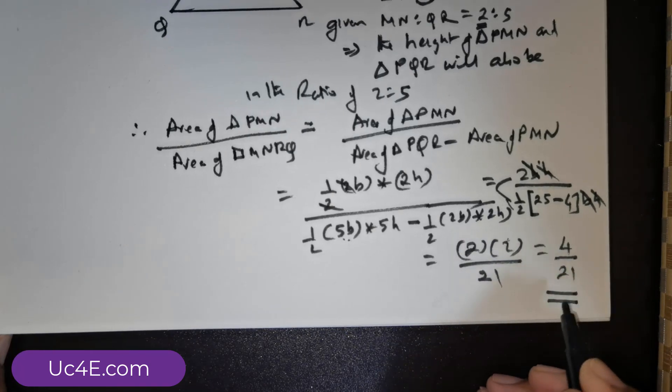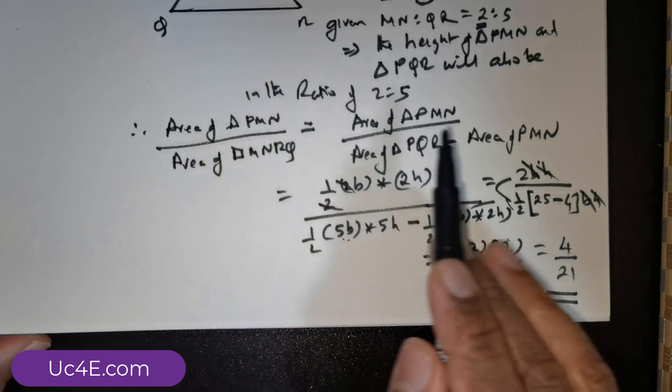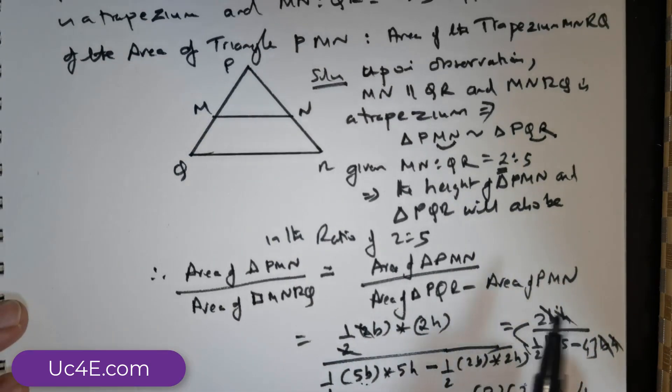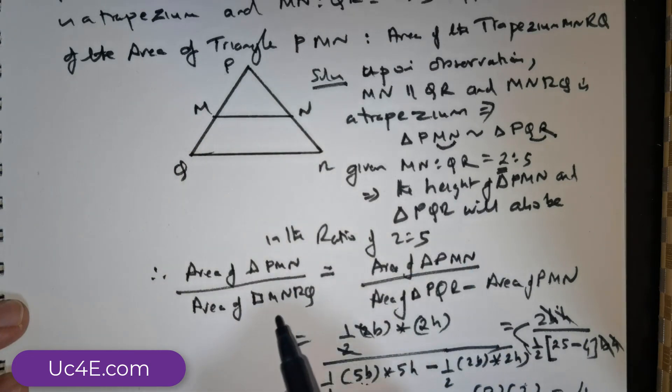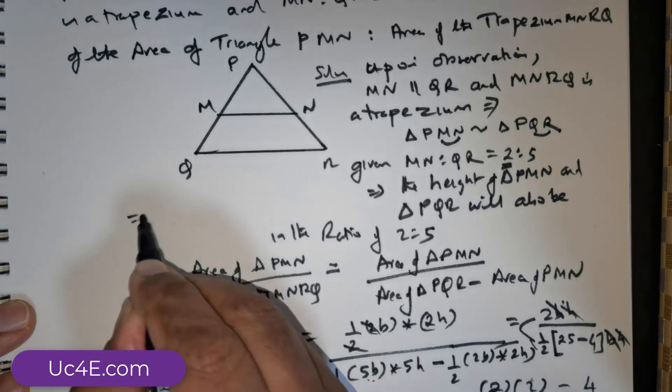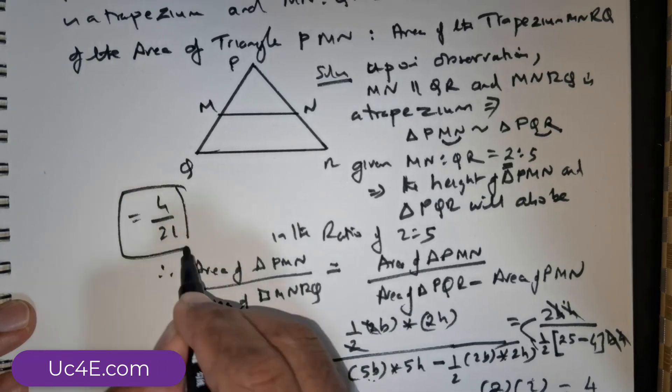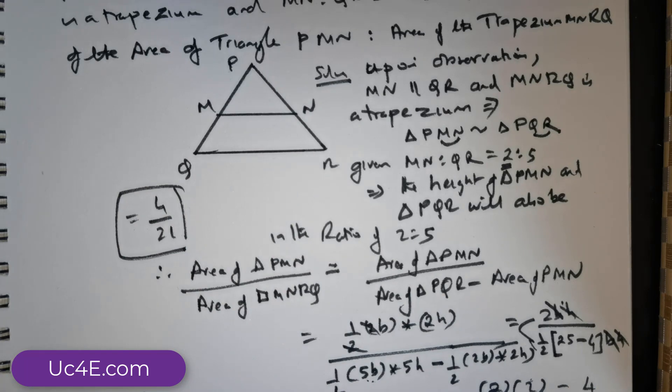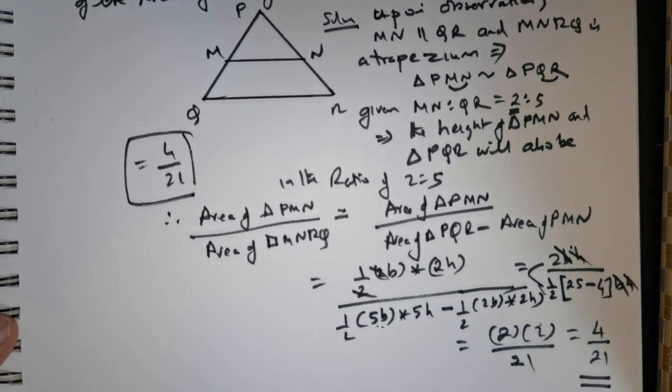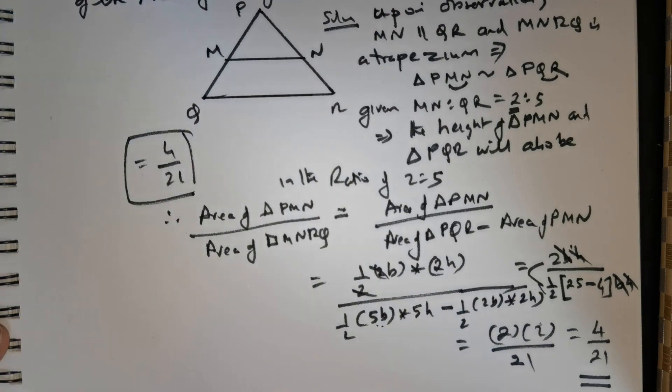The ratio of the area of the triangle PMN to the trapezium MNRQ is given to be as 4 over 21. This is a competitive exam question. And I hope you enjoyed this. Until we meet again. Enjoy your day. Thank you.